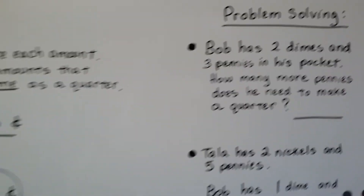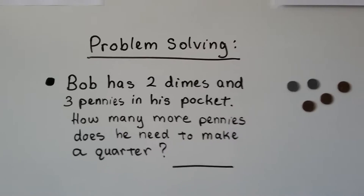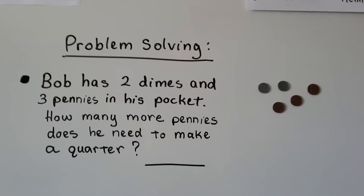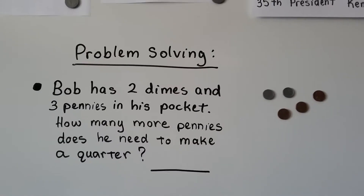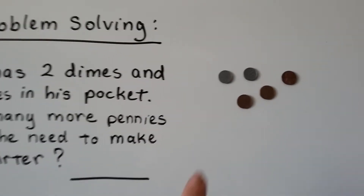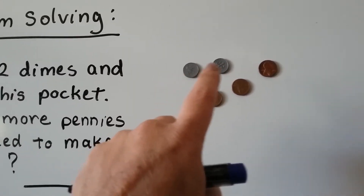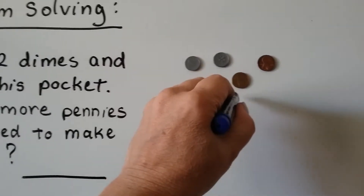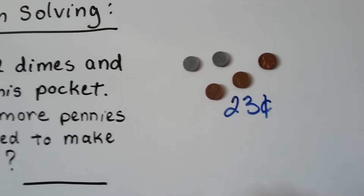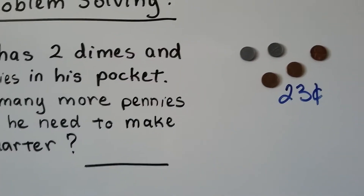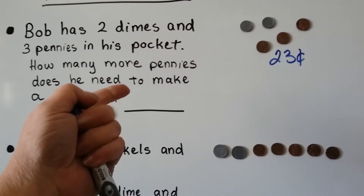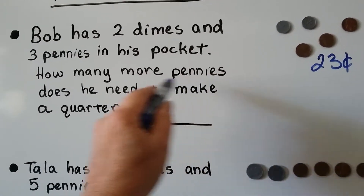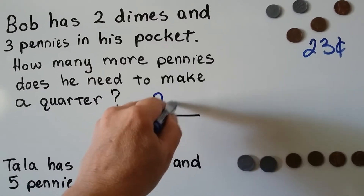Let's try some problem solving. Bob has two dimes and three pennies in his pocket. How many more pennies does he need to make a quarter? So he's got two dimes and three pennies — that's a 10 and a 10, that's 20, then 21, 22, 23. He's got 23 cents. How many more pennies does he need to make a quarter? 23, 24, 25 — he needs two pennies.